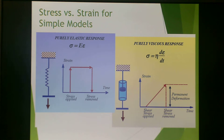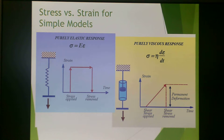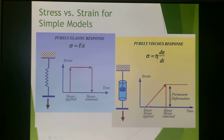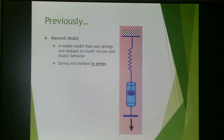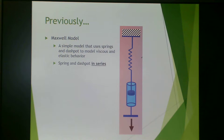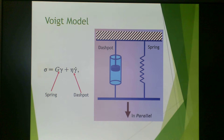To go over this again: the purely elastic response of the spring — you apply a stress, hold that stress, remove the stress, and there's recovery. In a purely viscous response represented by the dashpot, you apply a stress and the strain linearly grows until the stress is removed. The Maxwell model is a simple model using springs and dashpots in series to model viscous and elastic behavior. We're now going to look at the spring and dashpot in parallel, which is the Voigt model.